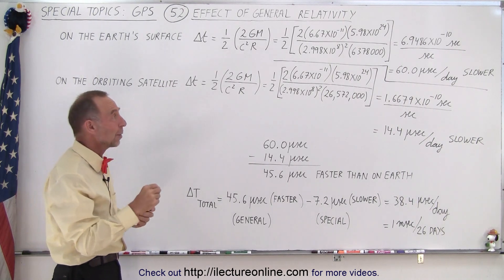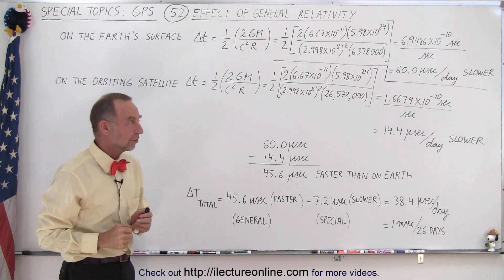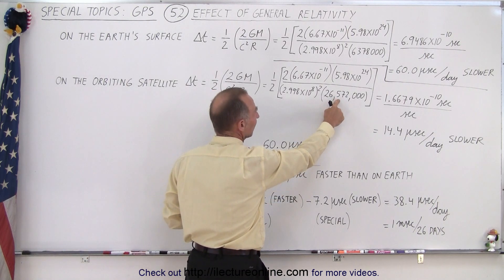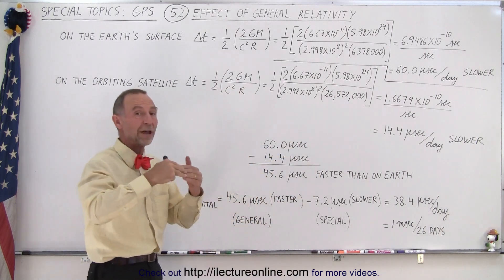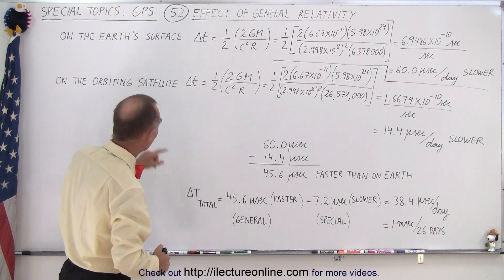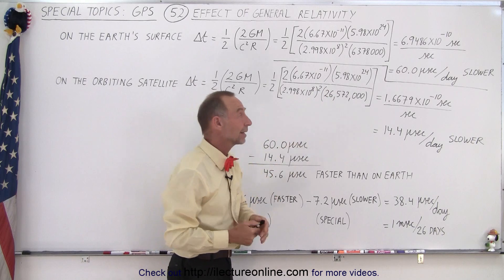So now we do it a second time but now we consider what it would be like at the location of the satellites. The satellites are at a distance of 26,572,000 meters away from the center of the Earth, a little bit over 20,000 kilometers from the surface of the Earth. And so we do the calculation again but now with a different radius.